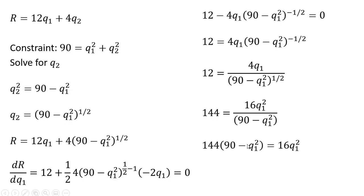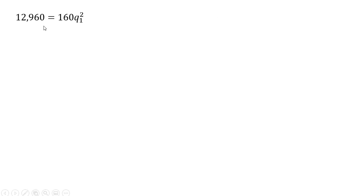And now cross-multiplying. Simplifying some more. Simplifying a little bit more brings us to this step. Dividing through by 160. And now taking the square root of both sides. The square root of 81 is 9.